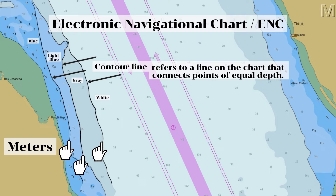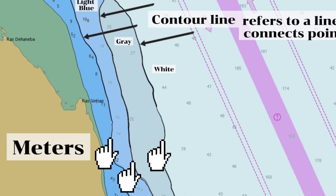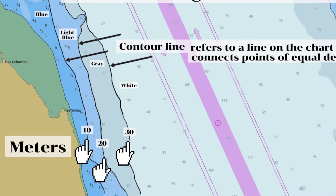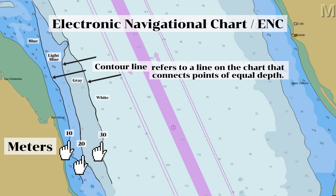Contours are shown at regular intervals depending on the availability of the ENC. Some ENCs have contours available from 2, 5, 10, 15, 20 meters and so on. There are also ENCs where contours are available at 5, 10, 20, 30, 40, 50 meters and so on at regular intervals. We can find the available values of the different contours of a particular ENC in the electronic chart display and information system, or ECDIS.